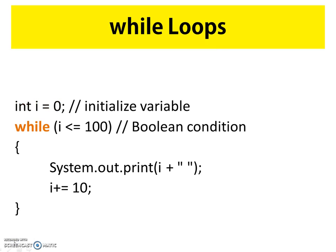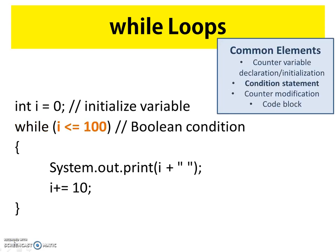Next you're going to notice the keyword highlighted here — while — which indicates to our compiler that a while loop is going to be used. After the while keyword, we have a set of parentheses, and within the parentheses we have our condition statement. In this instance, our condition statement is i is less than or equal to 100, and that condition statement is a Boolean condition.